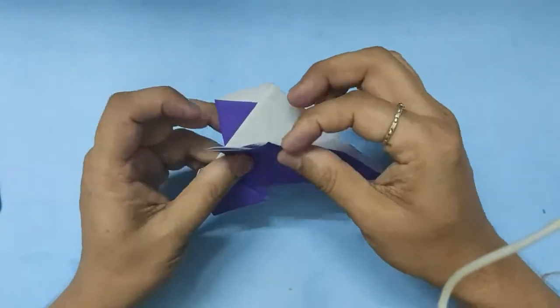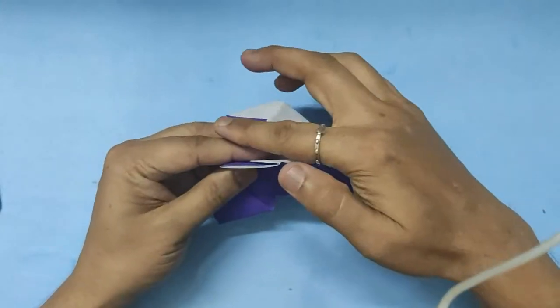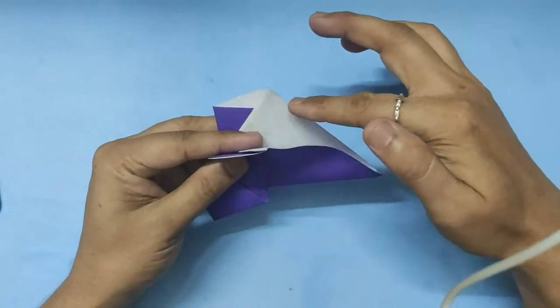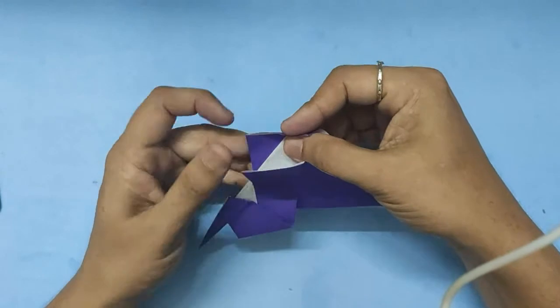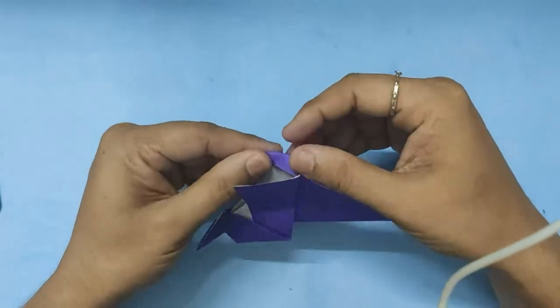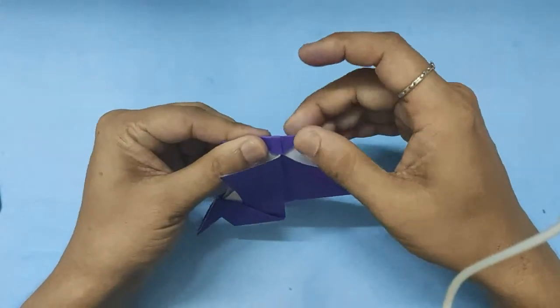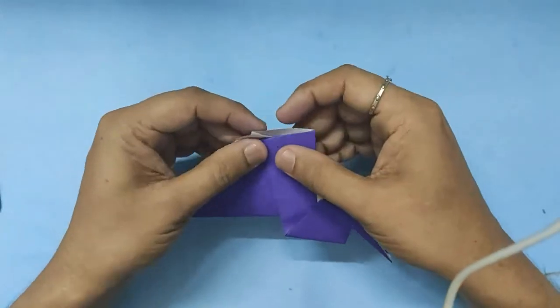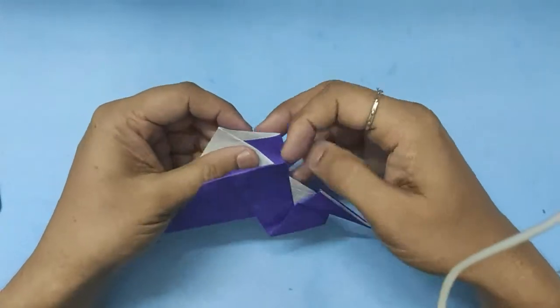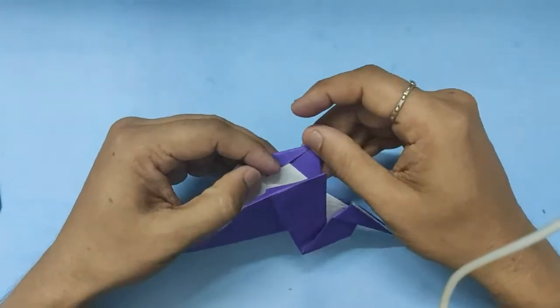Now the back, when you open this part, you will see this blue and white line. Fold that along that line inside. Same thing on the other side. When you open it, fold it along that blue and white line.